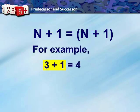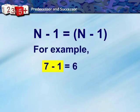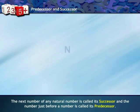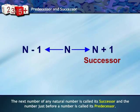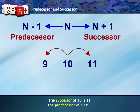If we add 1 to any natural number, we get the next natural number. For example, adding 1 to 3 gives 4, and adding 1 to 15 gives 16. Similarly, subtracting 1 from any natural number gives the previous natural number — for example, subtracting 1 from 7 gives 6, and from 23 gives 22. The next number of any natural number is called its successor, and the number just before it is called its predecessor. The successor of 10 is 11 and the predecessor of 10 is 9.